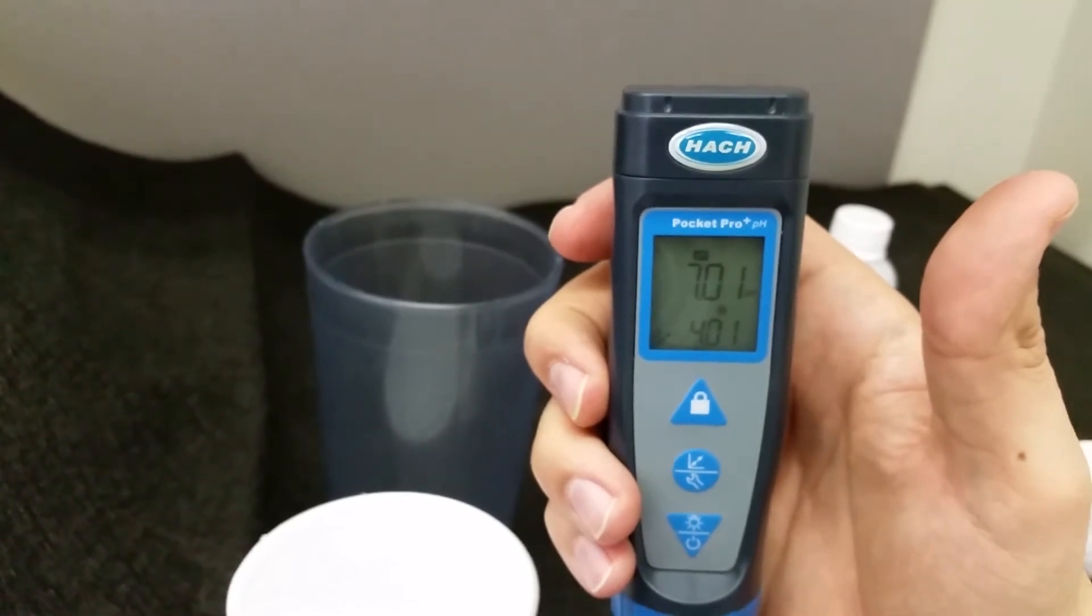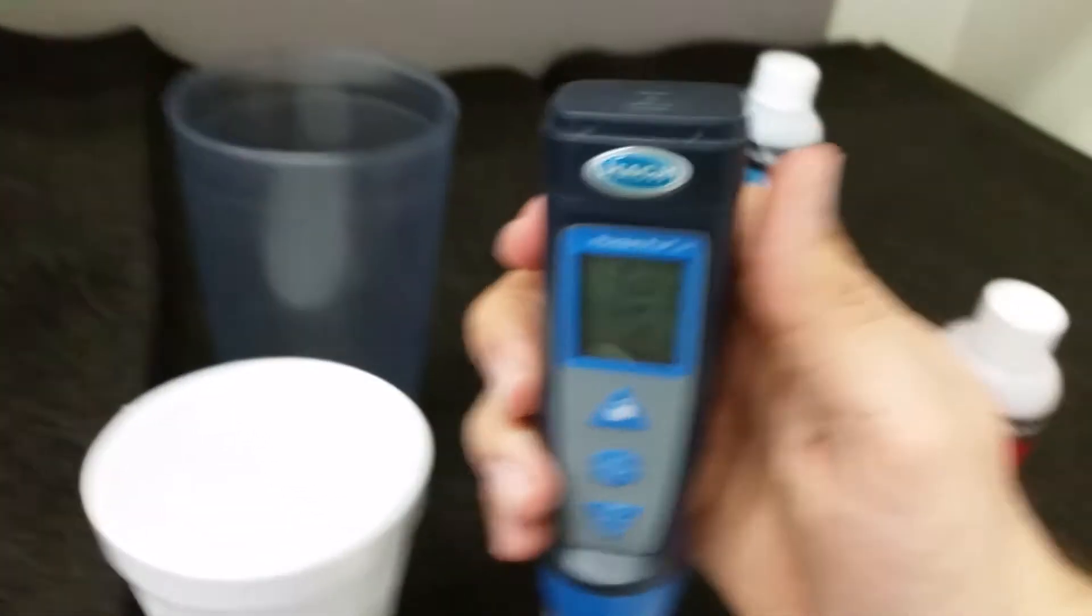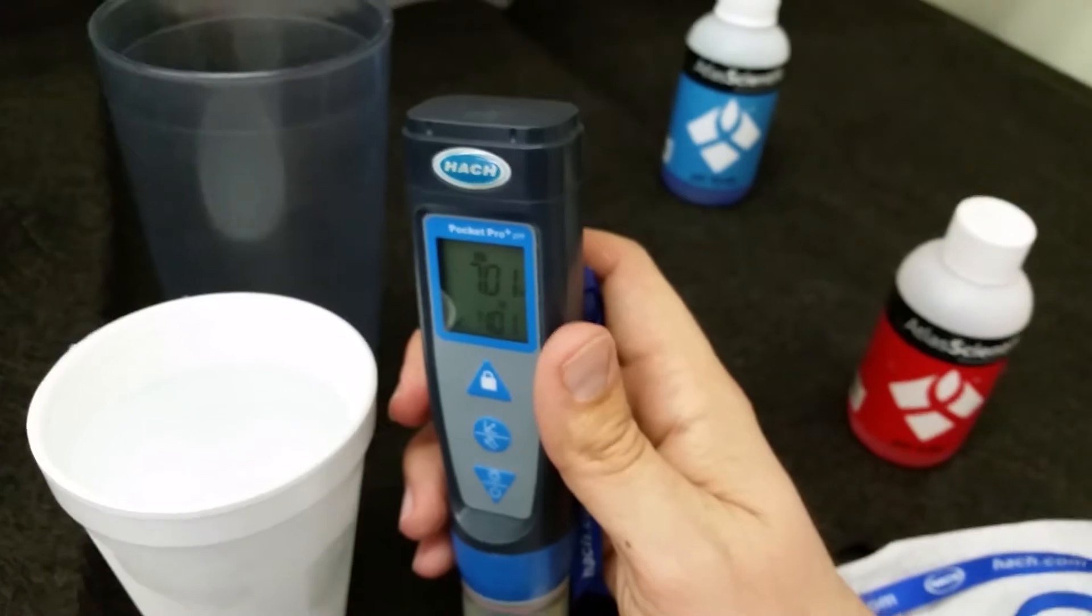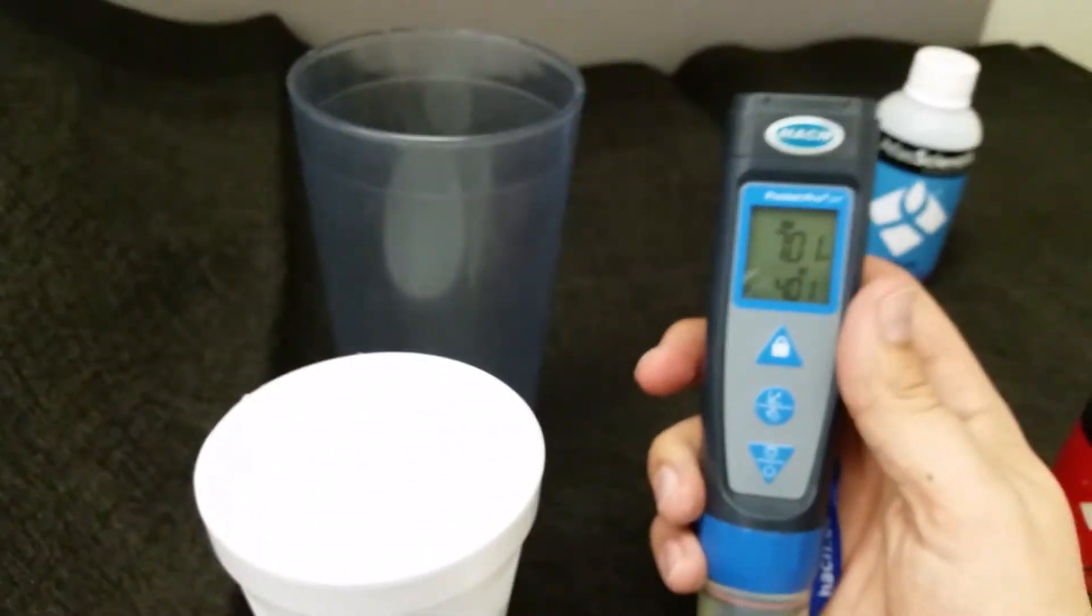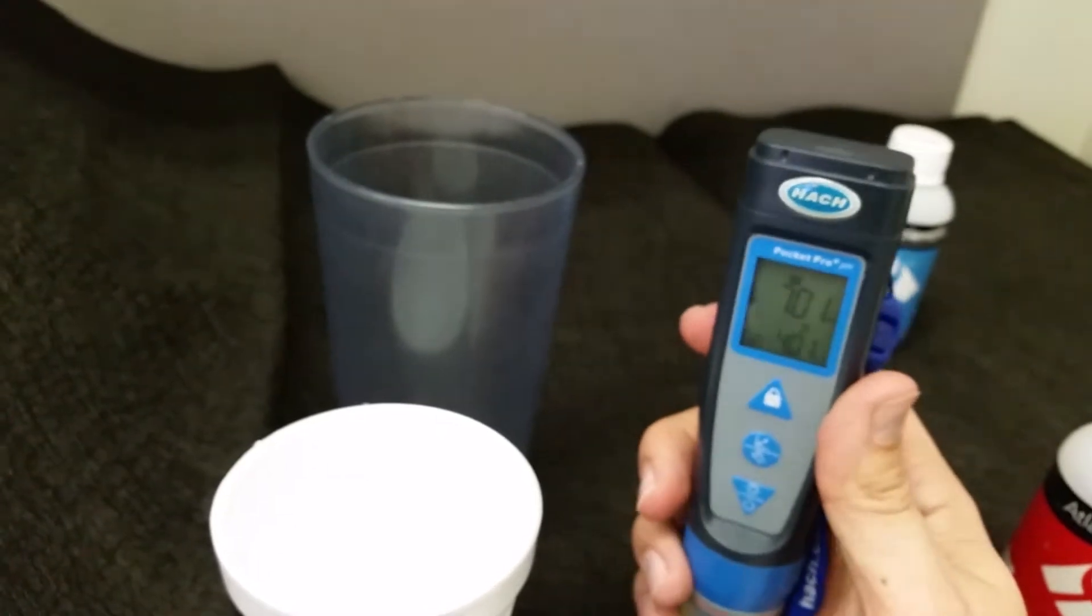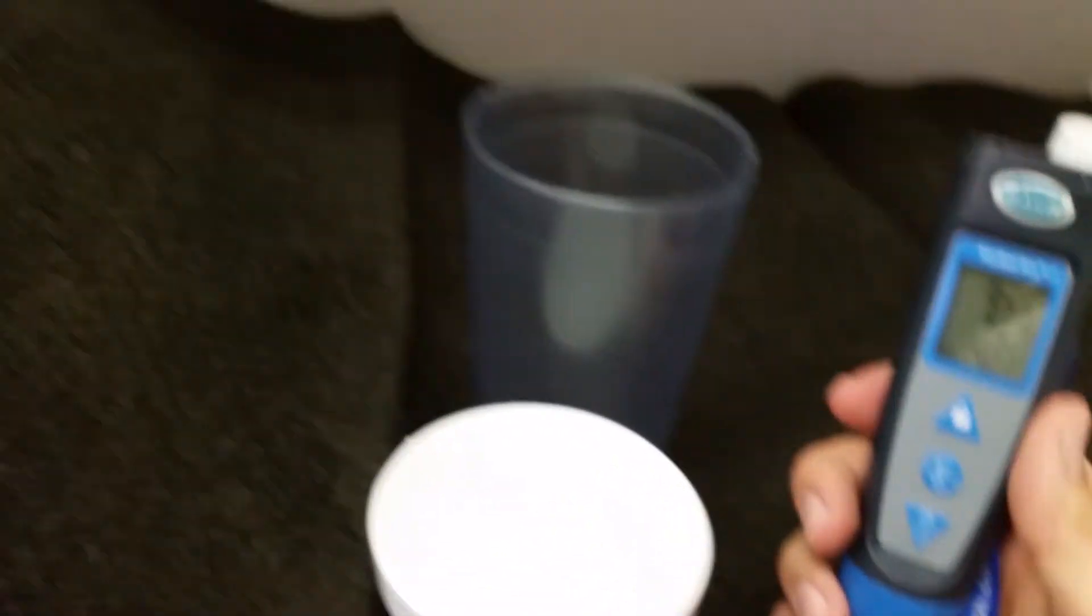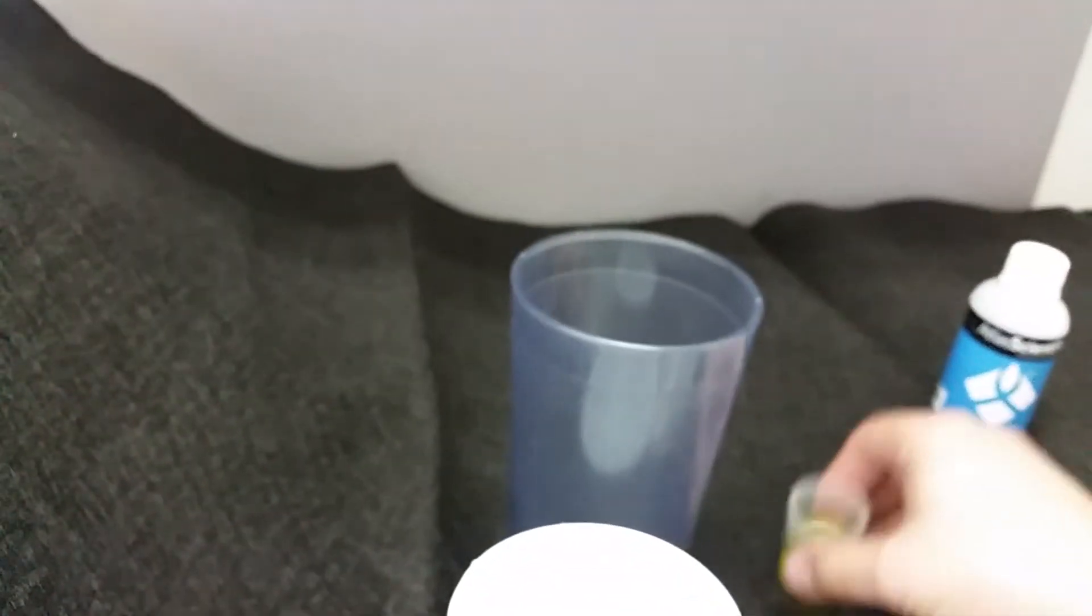Now it gives you the option to, if you want to calibrate with the other solutions, you've got your pH of 4, your pH 10. You can do so, or you can just end right here. But we're going to go ahead and do the next step. So now we're going to just dump this out.